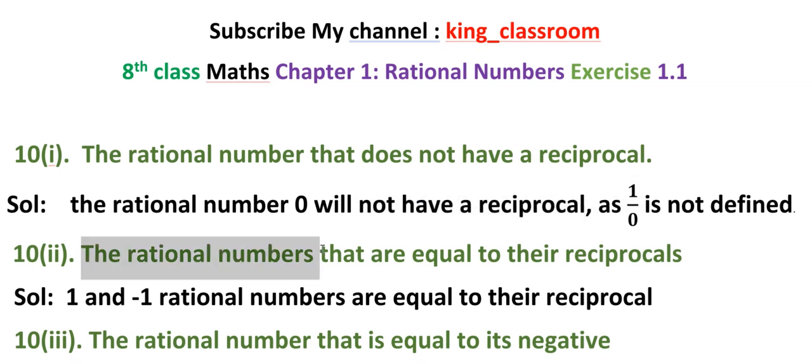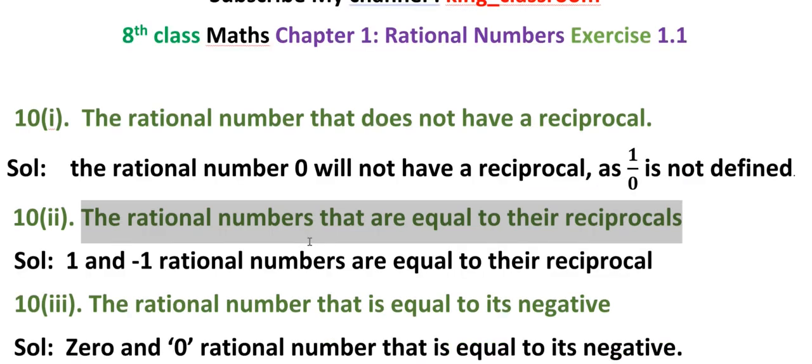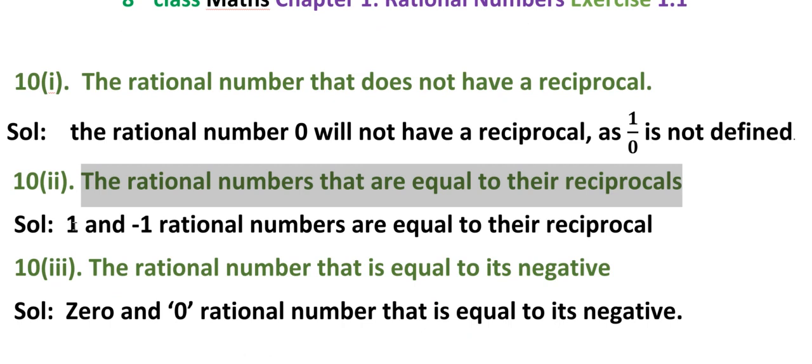10(ii): The rational numbers that are equal to their reciprocals. Solution: 1 and minus 1 rational numbers are equal to their reciprocals.